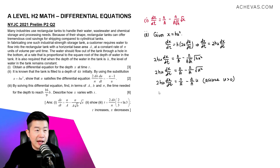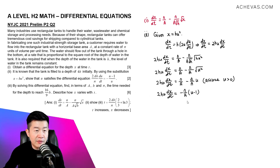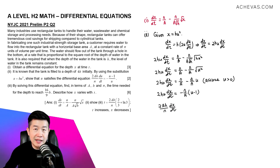Factorizing out negative n/A on the right-hand side gives us (u minus 1), which matches what we need to show. Dividing u across and dividing n/A across to the other side gives 2Ah/n · du/dt = (u minus 1) divided by u. This is what we were supposed to show.